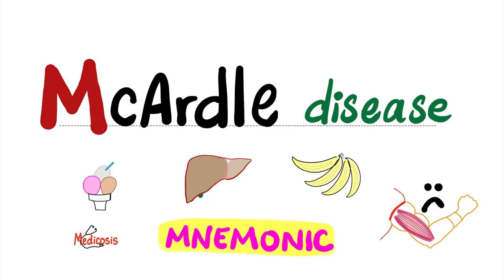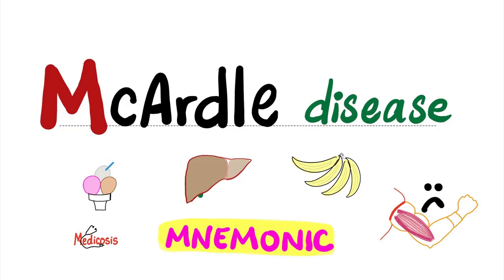What is going on, wonderful people? It's Medicosis Perfectioneros, where medicine makes perfect sense. Welcome back to my biochemistry playlist. In previous videos, we started talking about glycogen storage diseases. We talked about type 1, which is von Goerke disease; type 2, which is Pompey's disease; type 3 is Corey's disease; type 4 is Anderson disease. Today, we'll talk about glycogen storage disease type 5, which is McArdle disease.